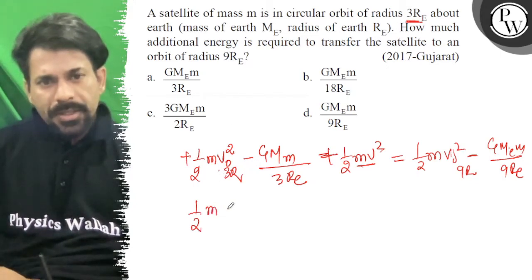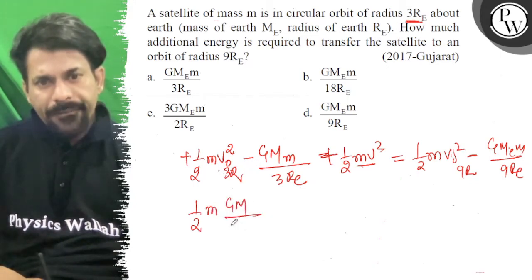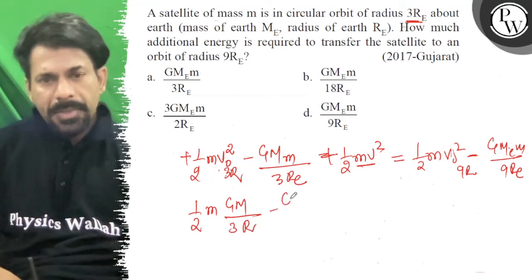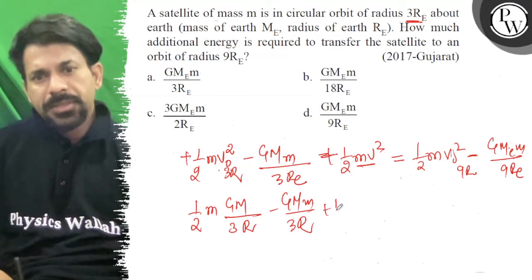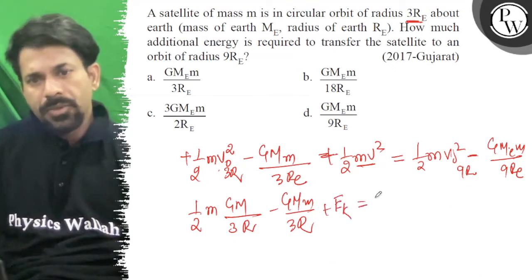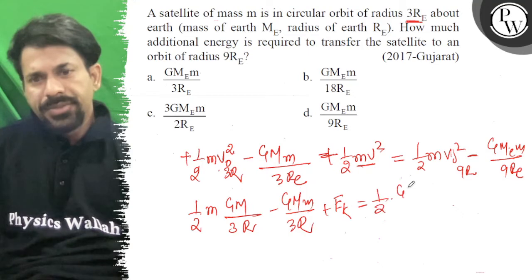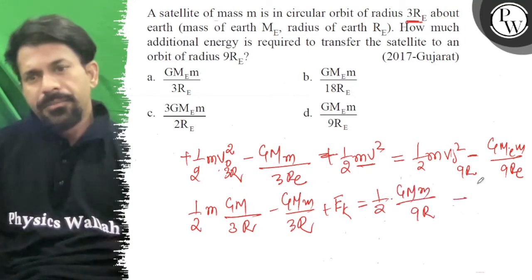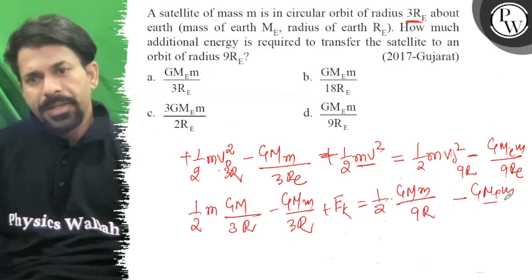Plus kinetic energy is equal to half of GM upon 9R minus GMm upon 9R.